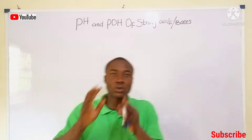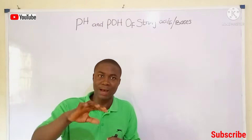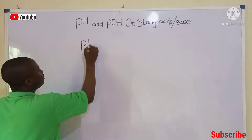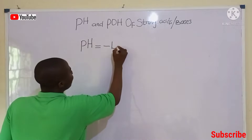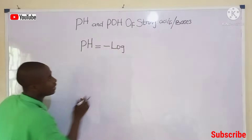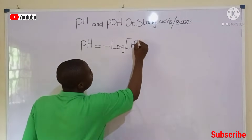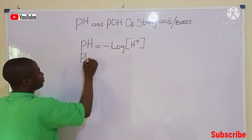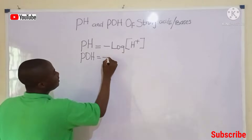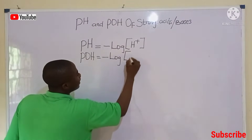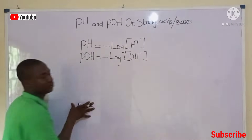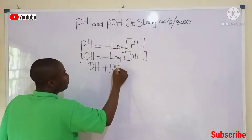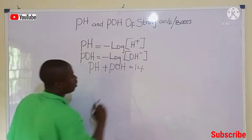There are equations used to solve the pH and pOH of strong acids and bases. To calculate the pH of strong acids, it is: pH equals the negative logarithm to the base 10 of hydrogen ion concentration. To calculate the pOH, it is basically the negative logarithm to the base 10 of hydroxide ion concentration. The addition of pH and pOH gives us a value of 14.